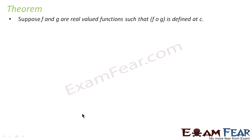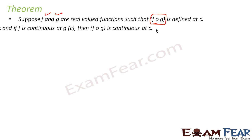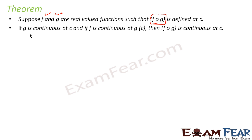The theorem says that if f and g are real-valued functions such that f∘g is defined — please note, if f∘g is defined then only this theorem exists — and if g is continuous at c and f is also continuous at c, then f∘g is continuous at c.